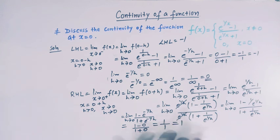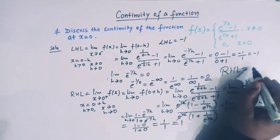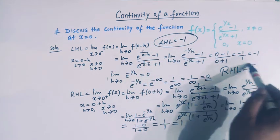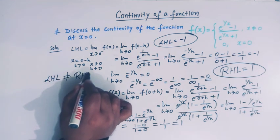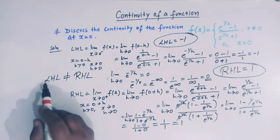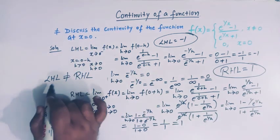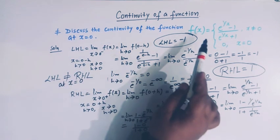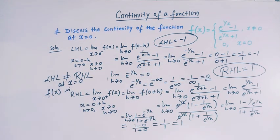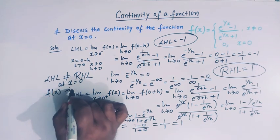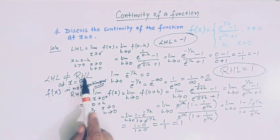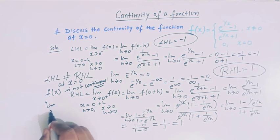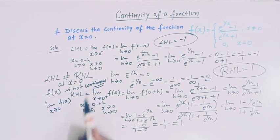We have seen that the left hand limit is -1 and the right hand limit is 1. Since the left hand limit is not equal to the right hand limit at x = 0, the limit x→0 f(x) does not exist. Therefore, we conclude that f(x) is not continuous at x = 0.